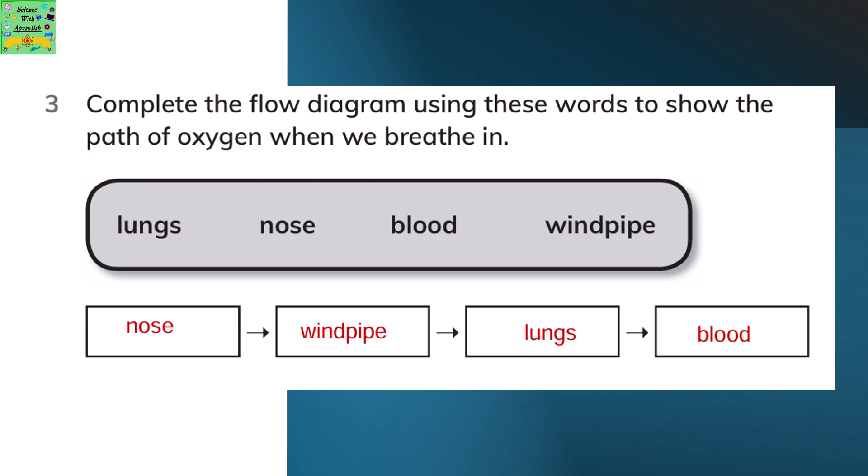Complete the flow diagram using these words to show the path of oxygen when we breathe in. The oxygen moves from the nose through the windpipe into our lungs, and then passes into the blood.